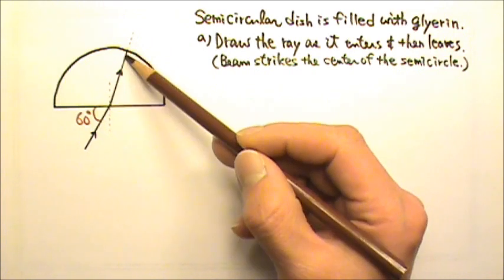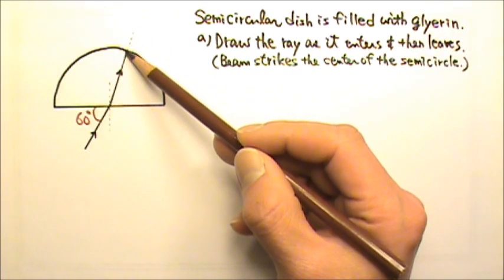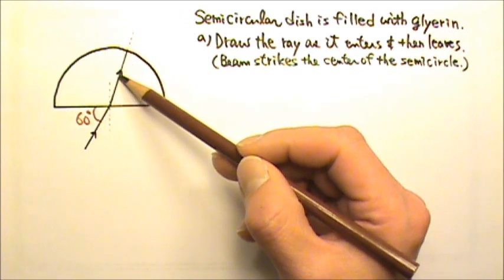This is what we call normal incidence. When we have normal incidence, light ray travels straight through.